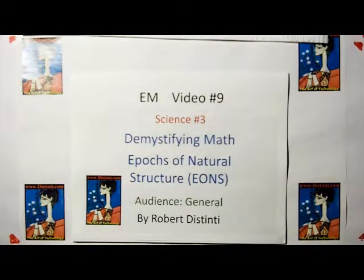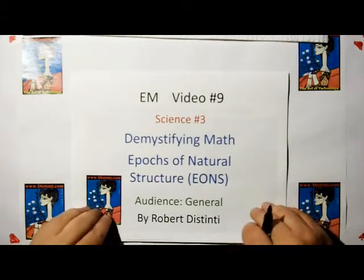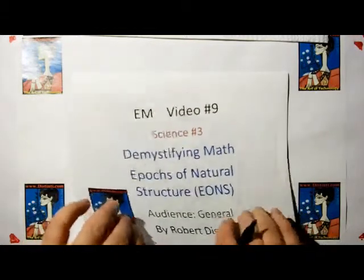Today we're going to talk about demystifying mathematics. I'm going to show you that math is nothing more than, if you can count chickens, you can do anything Einstein can do. And then we're going to introduce the epochs of natural structure, which is some way of looking at stuff.